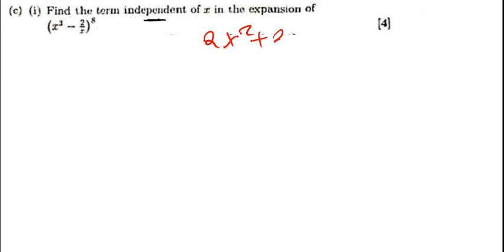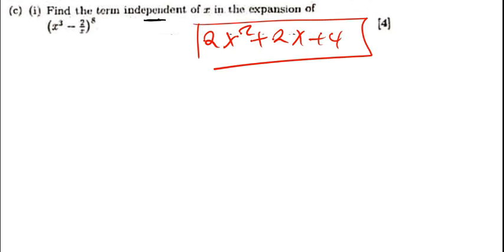Now one thing I want you to understand is this. Whenever we're talking about a term independent of x, let's assume we have got an expression that is maybe 2x squared plus 2x plus 4. In this case, the term that doesn't have x is 4. So 4, in that case, we are going to say that that's the term independent of x. It's just the term that doesn't have x.